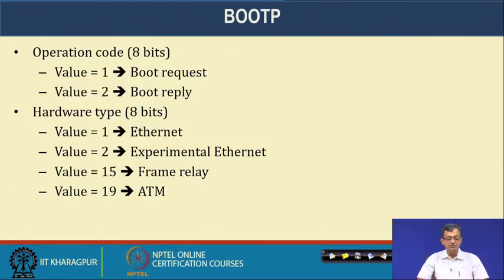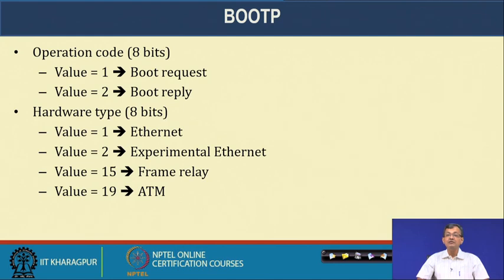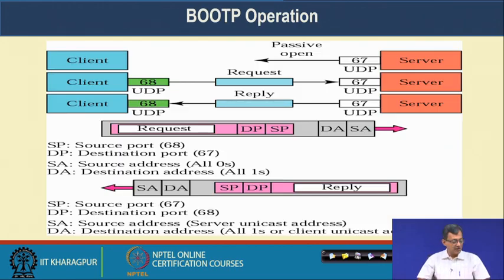For BOOTP, the operation code value is 1 for boot request and 2 for boot reply. The hardware type value is 1 for Ethernet, with other values for experimental Ethernet, Frame Relay, ATM, and so forth. BOOTP supports a variety of Layer 2 or data link level protocols including Ethernet, experimental Ethernet, Frame Relay, ATM, and different flavors.